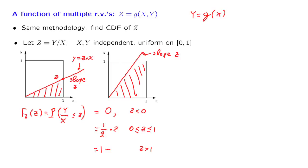What is the area of this triangle? Well, since this line has a slope of z, in order for it to rise to a value of 1, x must be equal to 1 over little z. Therefore, this side of the triangle is 1 over z, and therefore the area of the triangle is 1 half times 1 over z, which is this expression here. And so we have found the value of the CDF for all possible choices of little z.